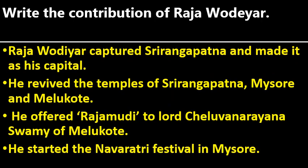Write the contributions of Raja Wadiyar. Raja Wadiyar made Srirangapatna the capital. He revered the temples of Srirangapatna, Melukote, and Mysore. He offered Rajamudi to Lord Cheluvanarayana Swami of Melukote. He started the Navaratri festival in Mysore, which is called Dasara.